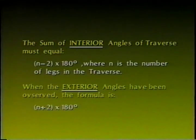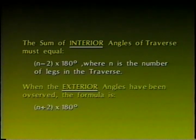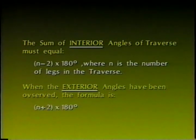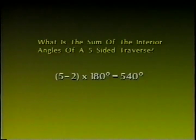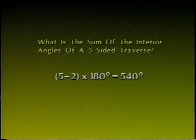The sum of interior angles of a traverse must equal the number of sides minus 2 times 180 degrees. Or, when the exterior angles have been observed, the formula is n plus 2 times 180 degrees. An example of this would be: what is the sum of the interior angles in a traverse of 5 sides? The answer would be 540 degrees.